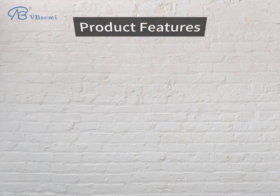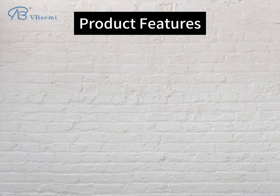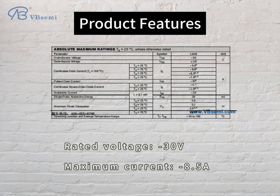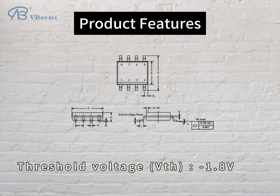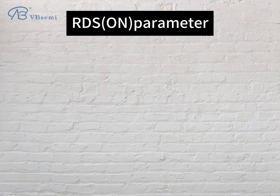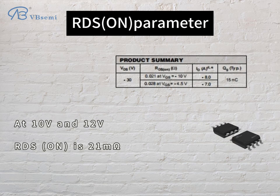Product features: rated voltage -30V, maximum current -8.5A. Threshold voltage VTH is -1.8V. RDS-ON parameter at -10V and -12V gate drive is 21 milliohms.